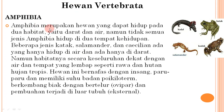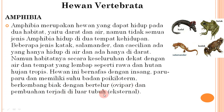Amphibia: hewan yang dapat hidup pada dua habitat, yaitu darat dan air. Tidak semua jenis amphibia hidup di dua tempat; beberapa seperti salamander dan caecilia ada yang hanya hidup di air atau di darat. Habitatnya secara keseluruhan dekat dengan air dan tempat yang lembab seperti rawa dan hutan hujan tropis. Bernapas dengan insang dan paru-paru, memiliki suhu badan poikiloterm (berubah sesuai lingkungan), berkembang biak dengan bertelur (ovipar) dan pembuahan terjadi di luar tubuh (eksternal).